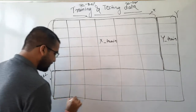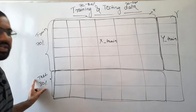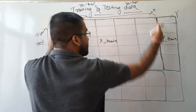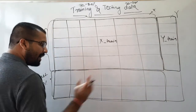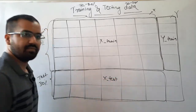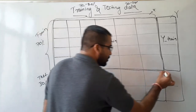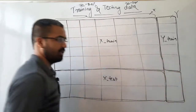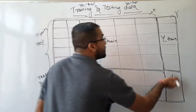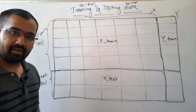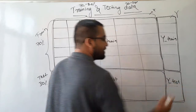Now focus on this section: it is for testing, and it contains independent variable data, so we combine the ideas and call it X_test — independent variable data used for testing. And the last portion is also part of the testing data, and it represents the label or target or dependent variable data, so we state it as Y_test. Simple as that.